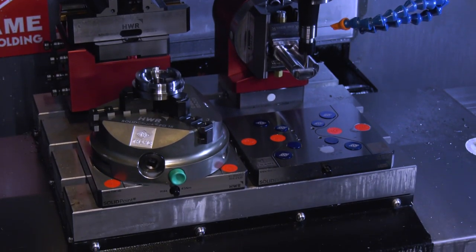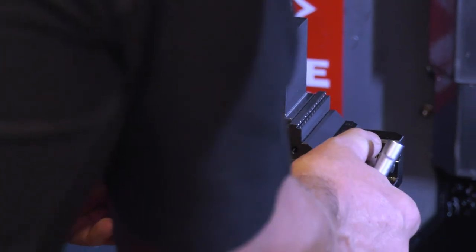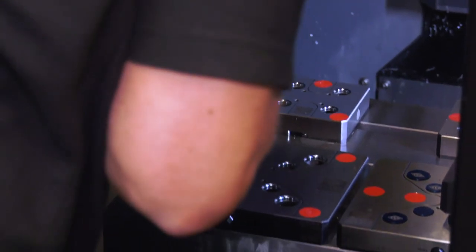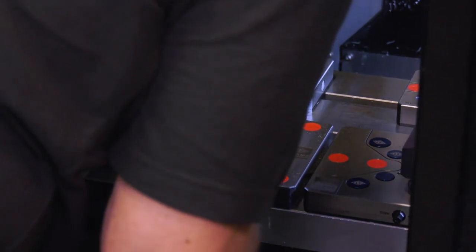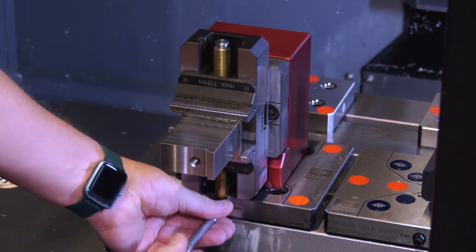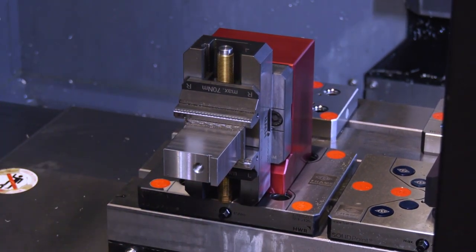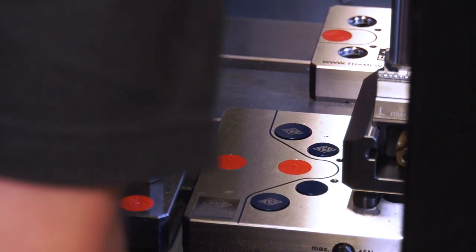What about palletisation? Does the zero point system lend itself to this kind of workholding? Yes, you could load up several pallets or fixtures outside the machine and then just put them in and out because you're only undoing one bolt, so it's a quick process. It's saving time again. How long does it take to remove one fixture and replace it with another? It's a couple of minutes.